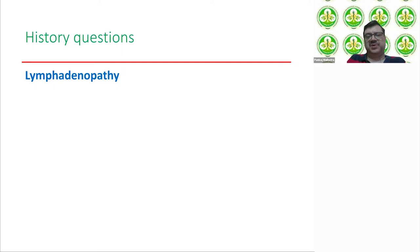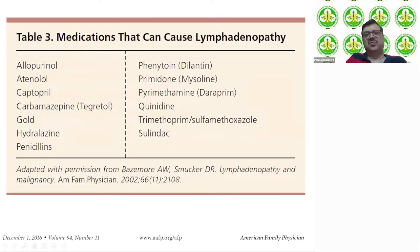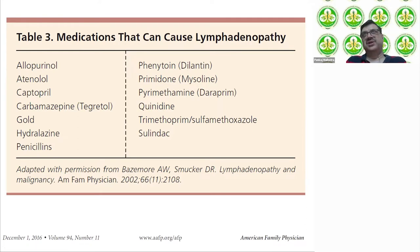When taking history, ask whether it is localized or generalized lymphadenopathy, and about history of drugs or medication. Important drugs causing lymphadenopathy include allopurinol, antihypertensives like atenolol and captopril, anti-epileptics like carbamazepine, penicillin, phenytoin, quinidine, and sulfa drugs. If the patient is taking these drugs and has a small asymptomatic lymph node with no other cause found, you would attribute it to the possibility of these drugs.